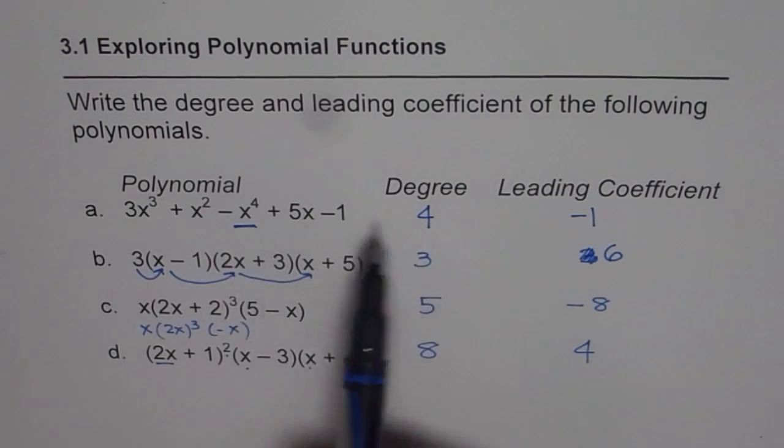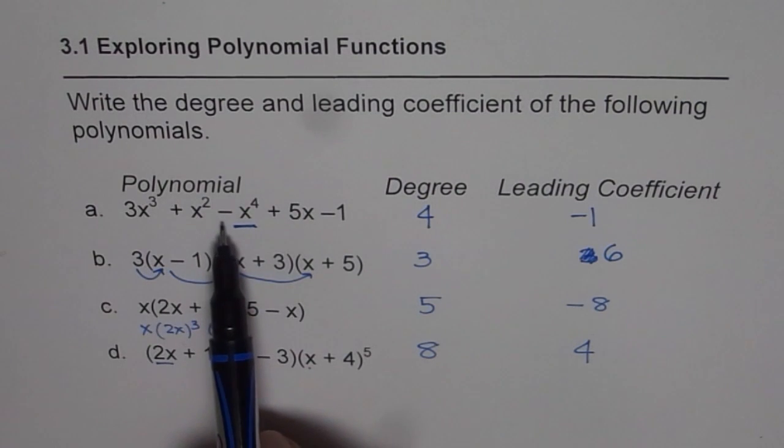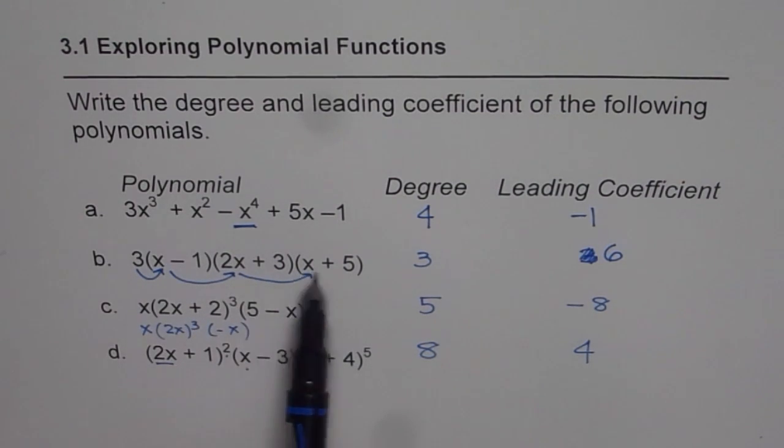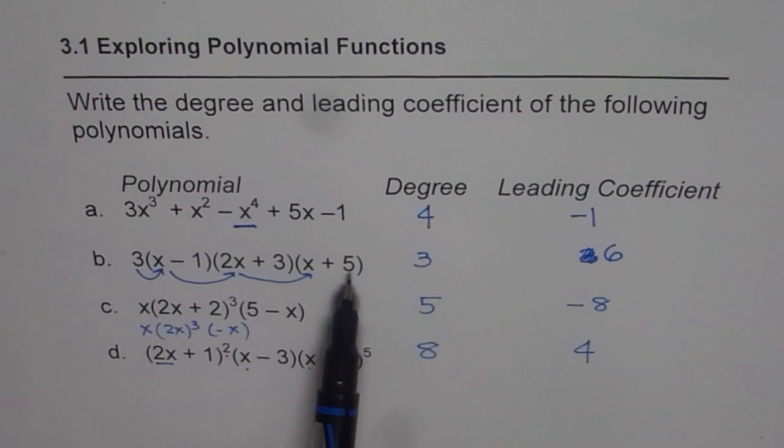The exponent gives you the degree and the leading coefficient is the number before it. Don't forget the sign. If you are given in factored form, you don't have to multiply and expand it and waste so much of time.